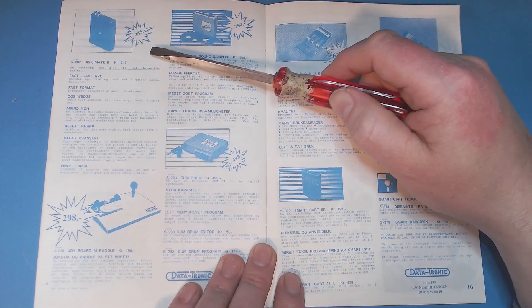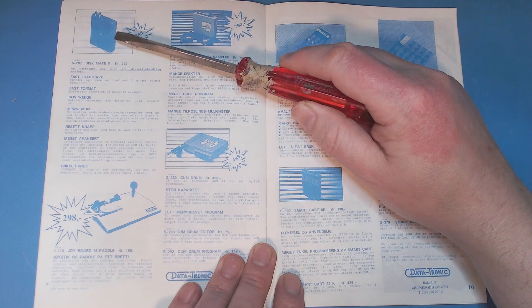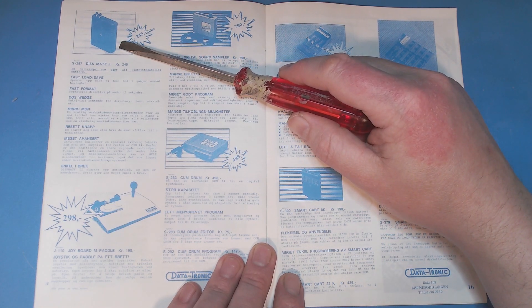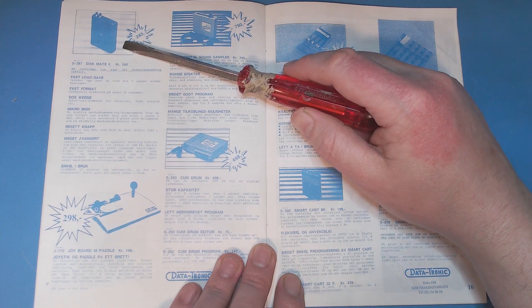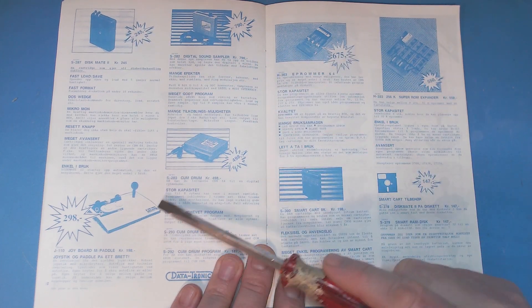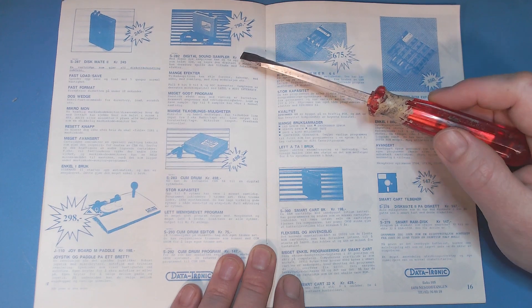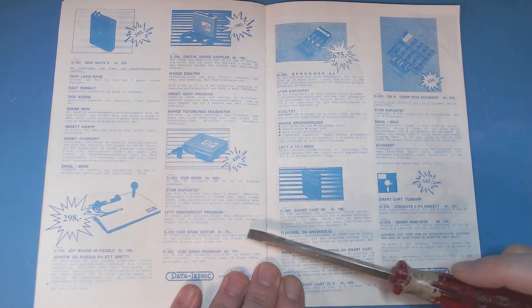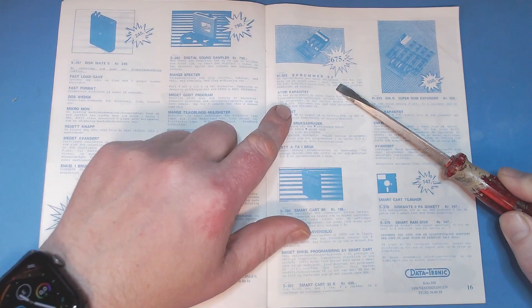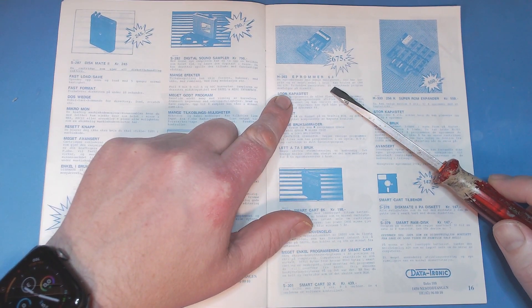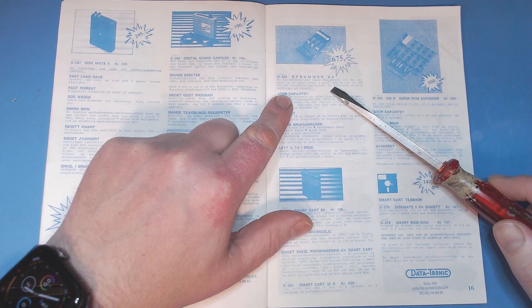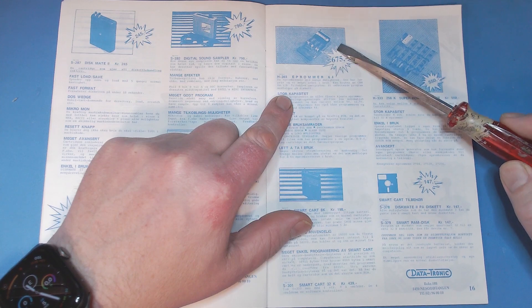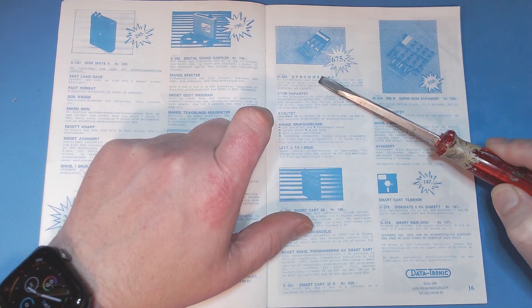Disc Mate was another fast load cartridge with also a lot of other extras like machine language monitor and so on. The joypads, sound sampler, drum kit. EPROM 64 - this one I actually got and I still have it. It's the DATA-L version of an EPROM programmer for the C64, and I actually use this a lot.